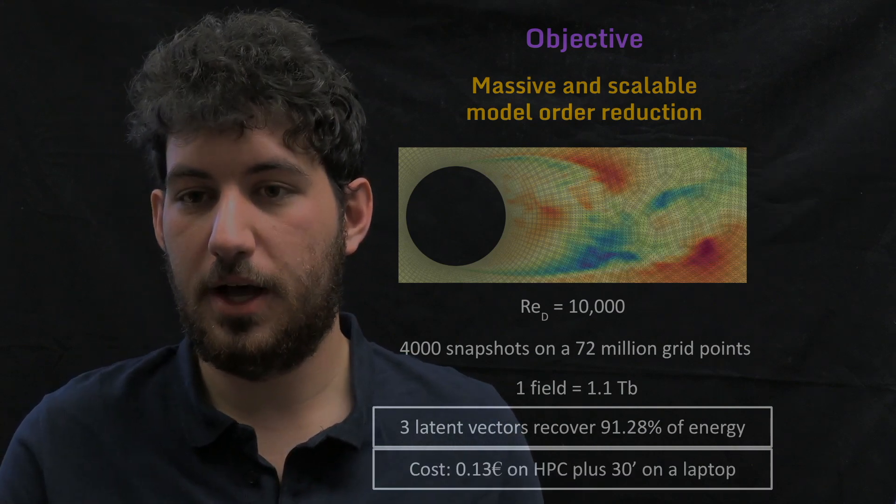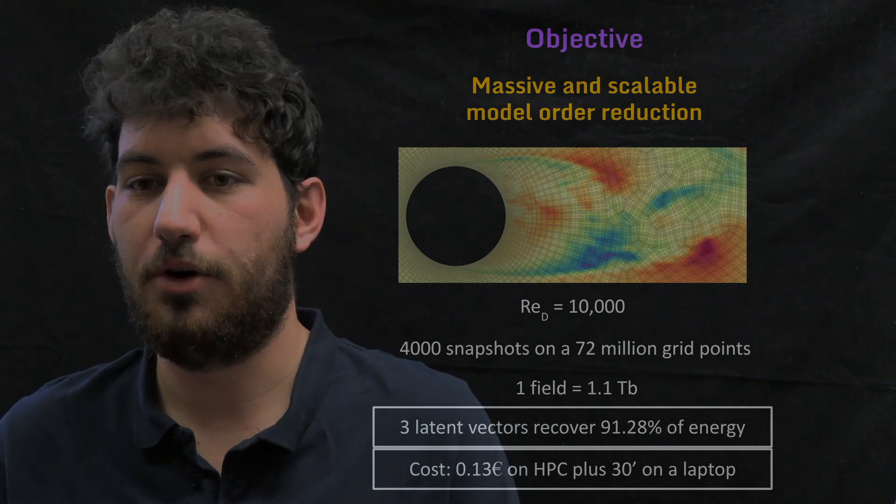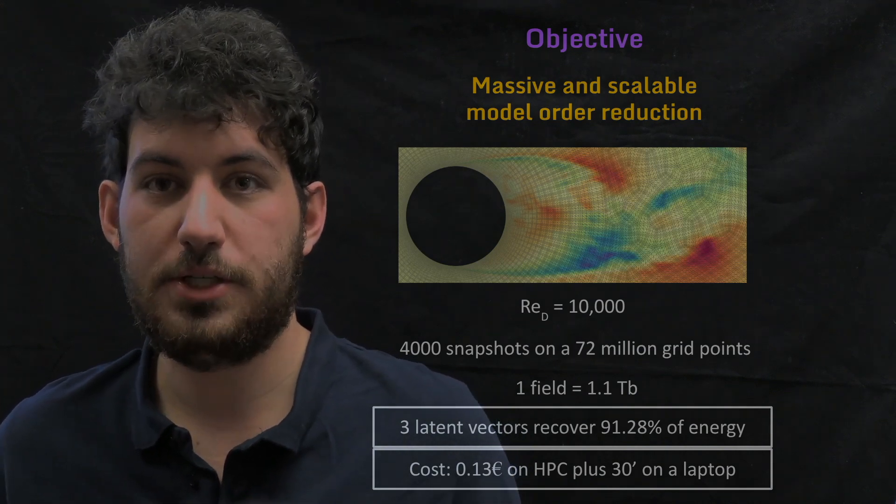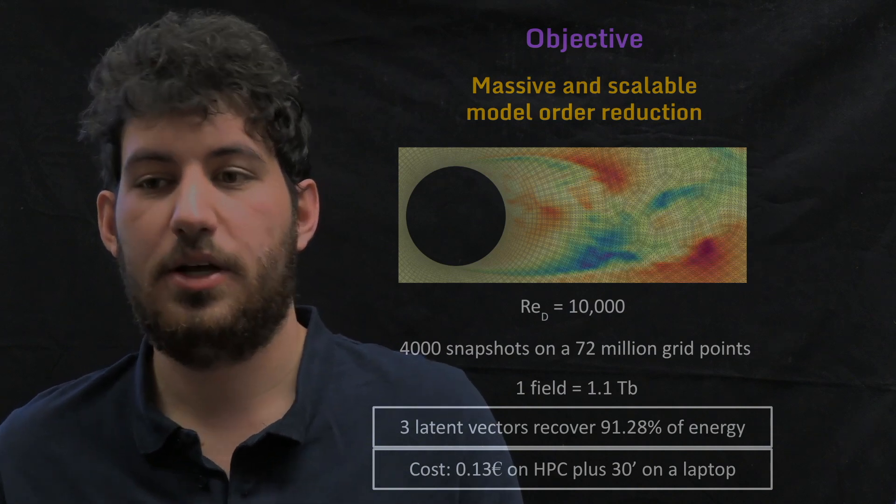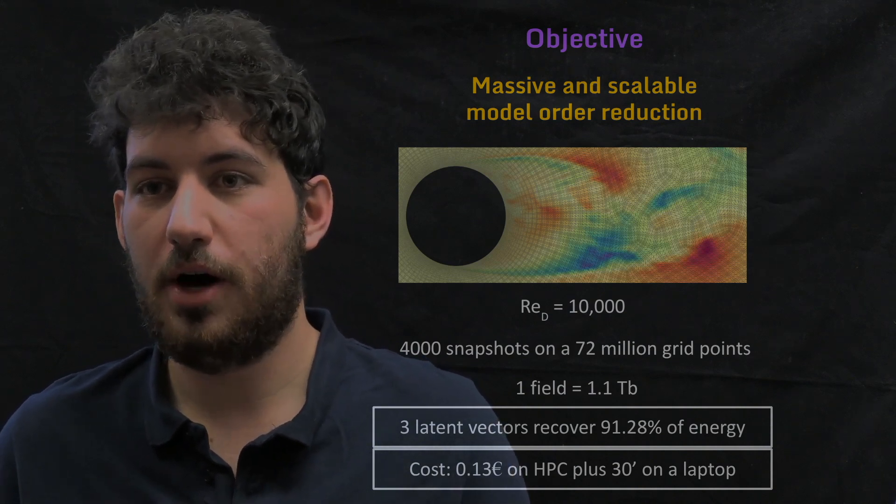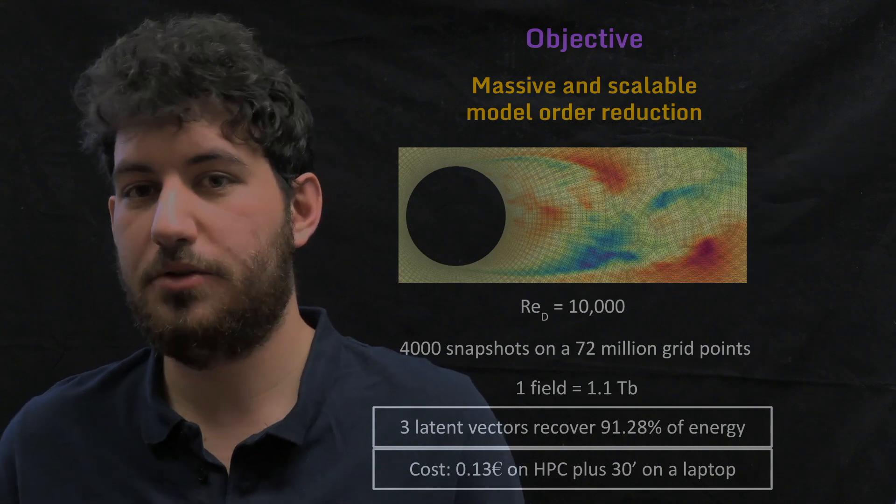Apart from that, the cost of this model and getting this dimensionality reduction is about 13 cents of euro on an HPC cluster plus 30 minutes of training on a laptop. So if you want to know how we achieved that, I recommend you to stay until the end of the video.